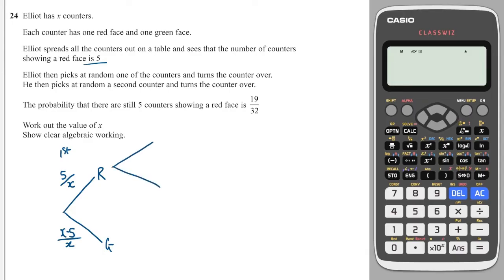Now we need to look at the second pick. Second pick, it could be red or green. Now if I've picked a red, then there's one less red to pick from, so that'll be 4 over X.